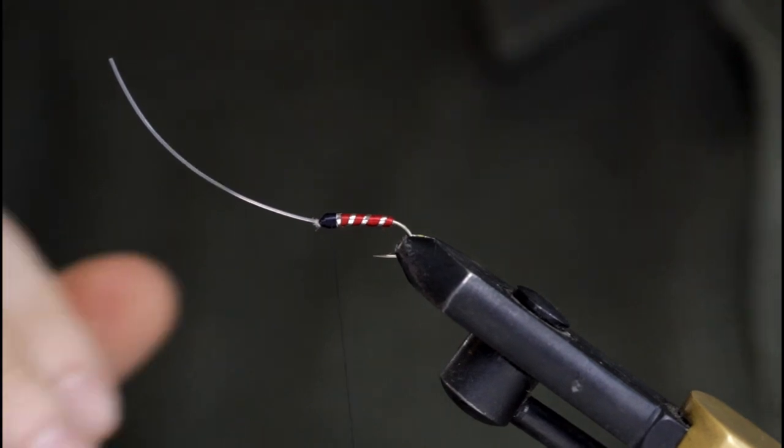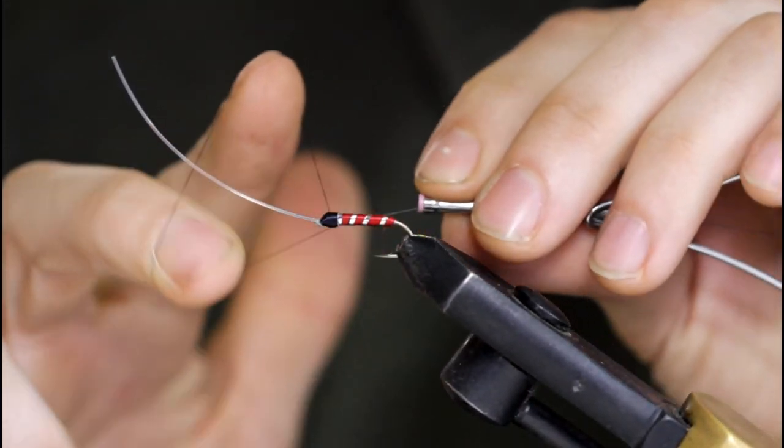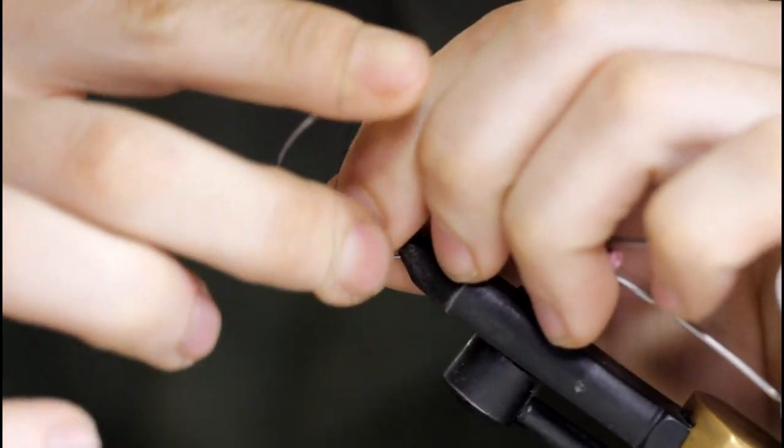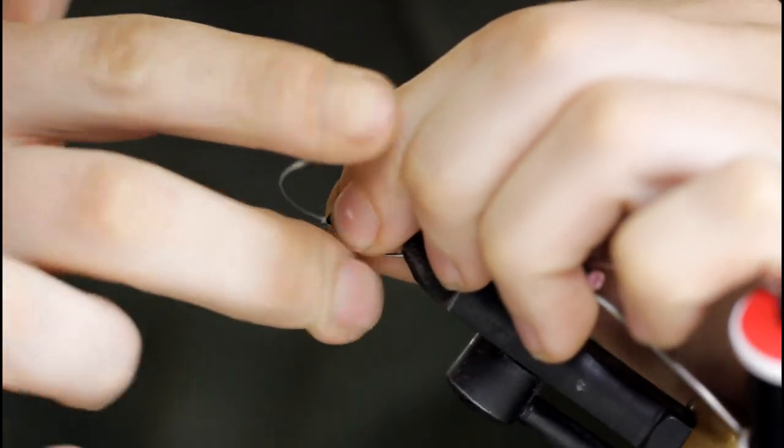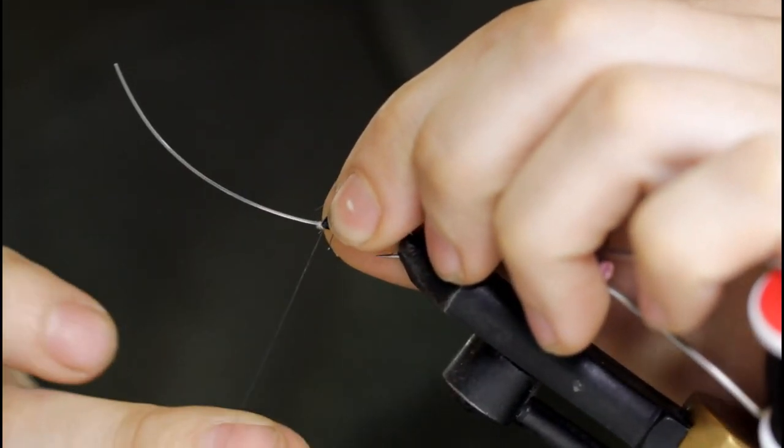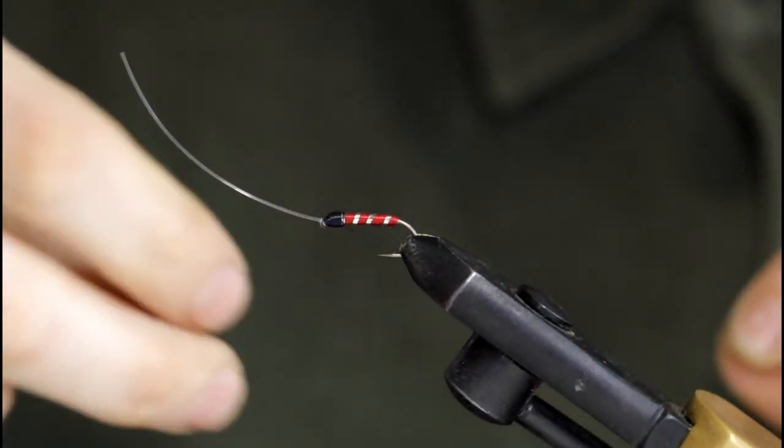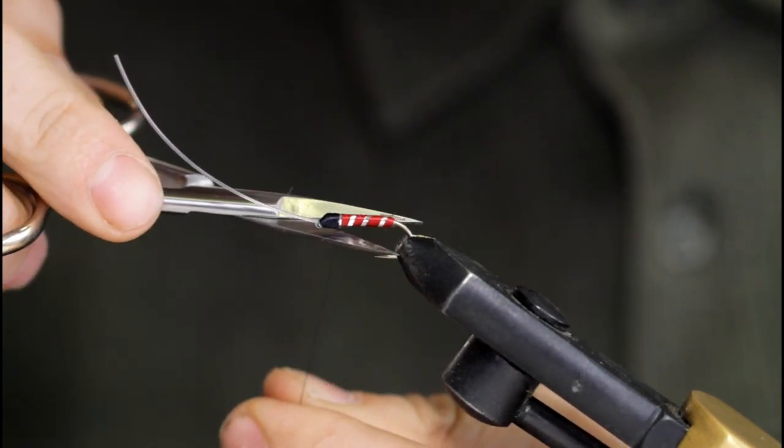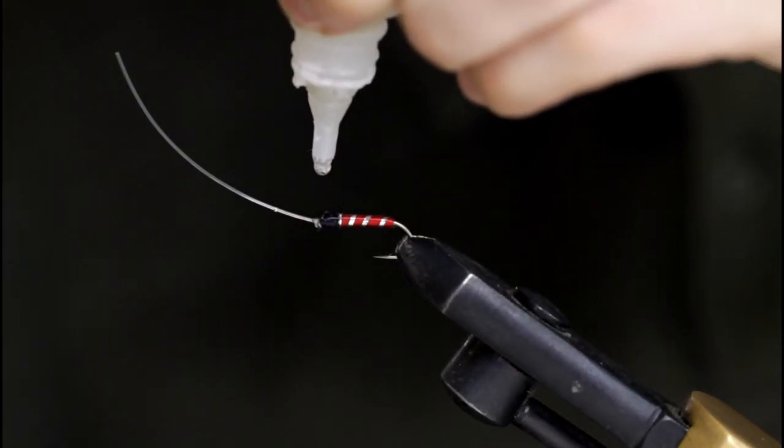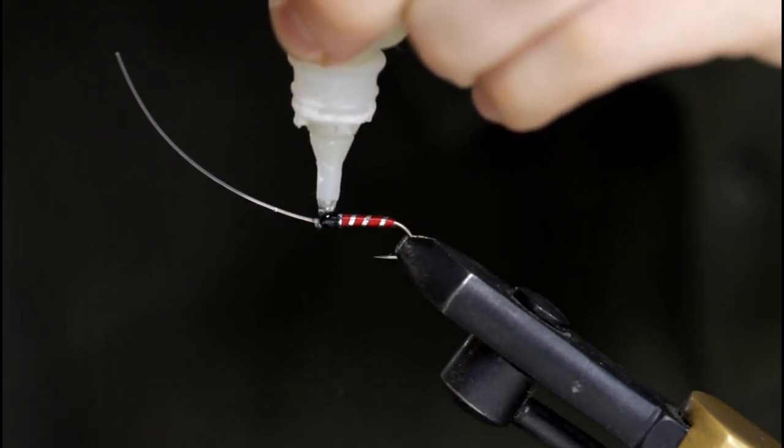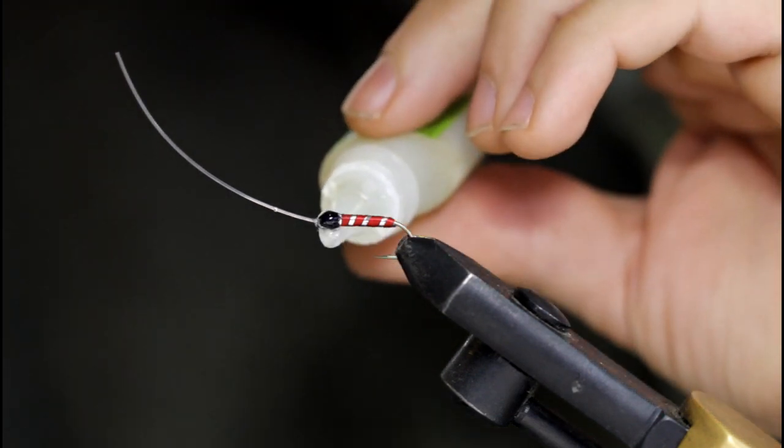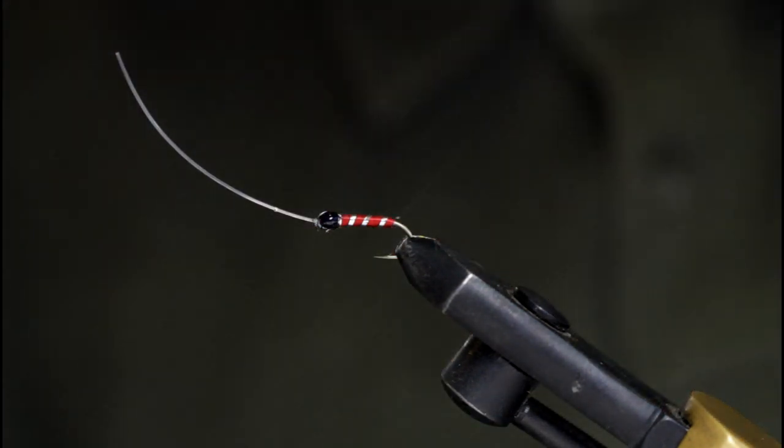And that looks pretty good. Tie it off. Now you can snip off the thread and if you feel like it, you can put some super glue or Zap-A-Gap or something in there, UV goo, whatever you want to use, just so those thread wraps stay in place. And set that aside to dry.